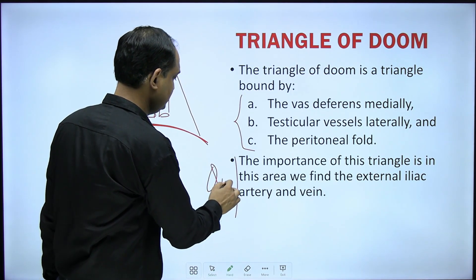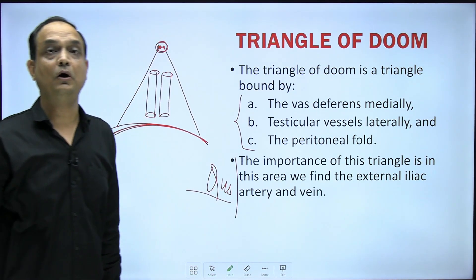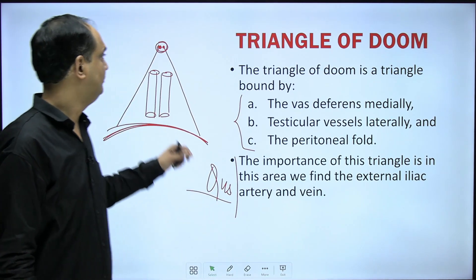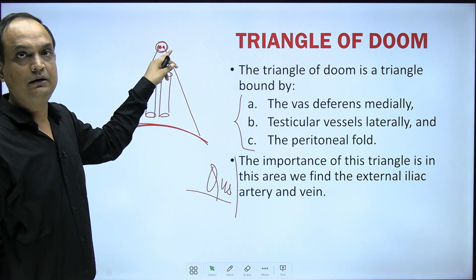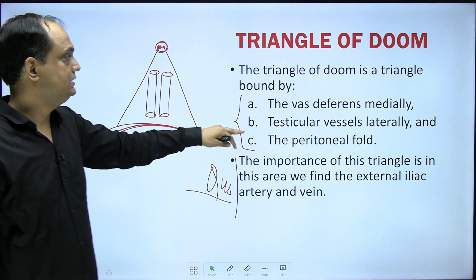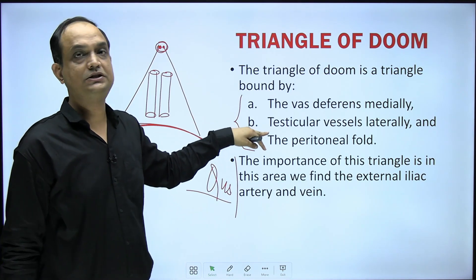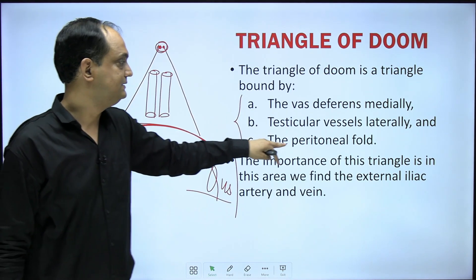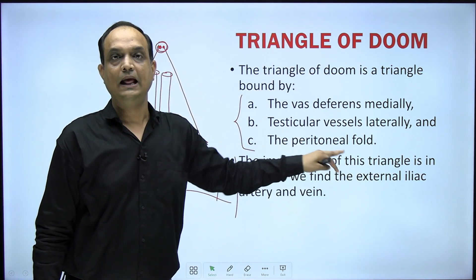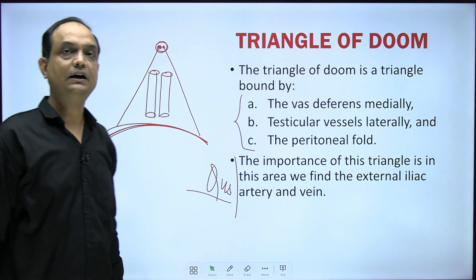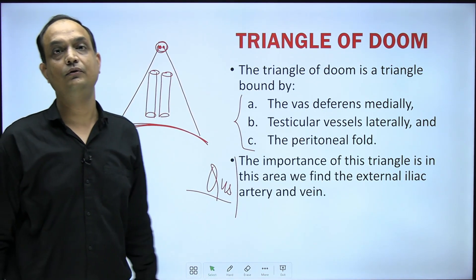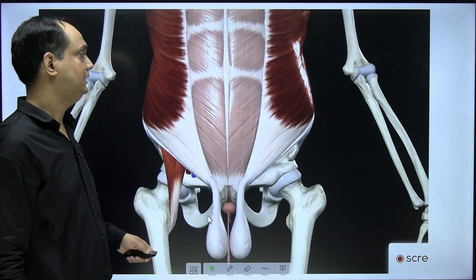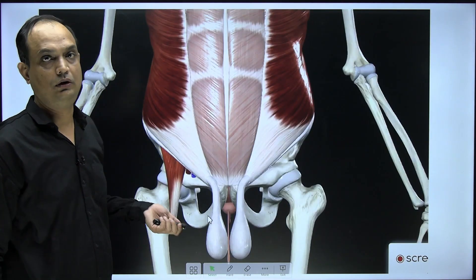This is a very commonly asked exam question — what are the boundaries of the triangle of doom? The apex is formed by the deep inguinal ring, the lateral boundary is formed by the testicular artery, the medial boundary is formed by the vas deferens, the base is formed by the peritoneal fold, and it contains the external iliac artery and vein.